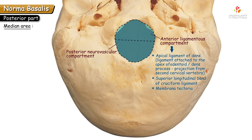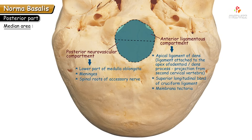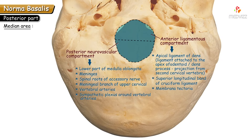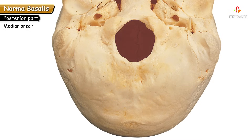In the posterior neurovascular compartment: the lower part of the medulla oblongata continues below the foramen magnum as the spinal cord, surrounded by the meninges (dura mater, arachnoid, and pia mater). Also present are the spinal roots of the accessory nerve (11th cranial nerve), the meningeal branch of the upper cervical nerve, and the vertebral arteries with their sympathetic plexus, along with the anterior and posterior spinal arteries.